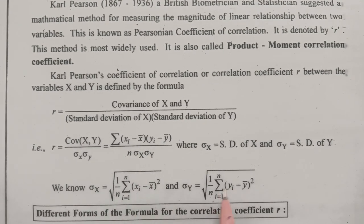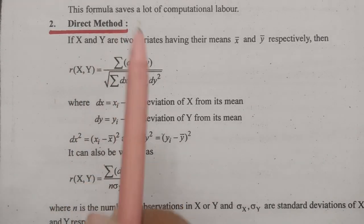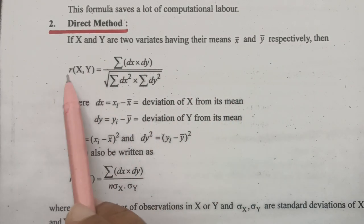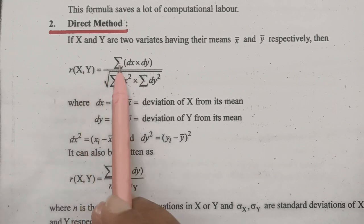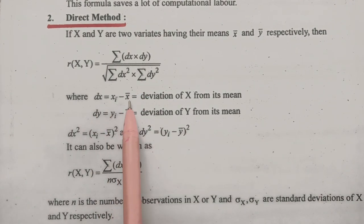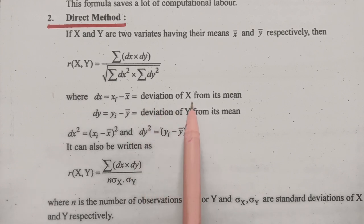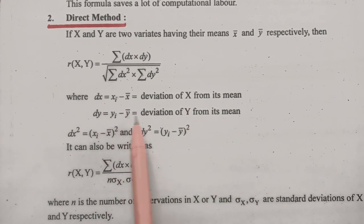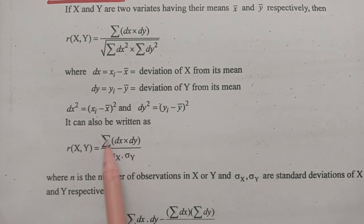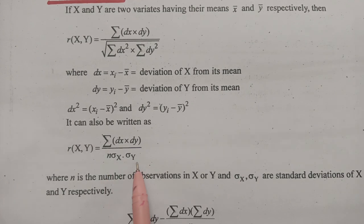In the direct method, if X and Y are two variates having means x̄ and ȳ respectively, then the correlation between X and Y equals Σ(dx × dy) / √(Σdx² × Σdy²), where dx = xi − x̄ is the deviation of X from its mean and dy = yi − ȳ is the deviation of Y from its mean. The covariance of (X, Y) = Σ(dx × dy) / (n × σx × σy).